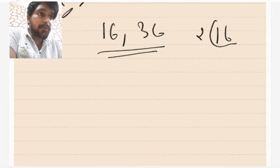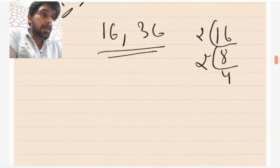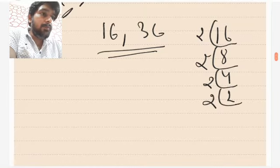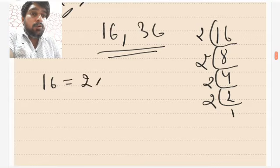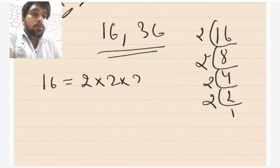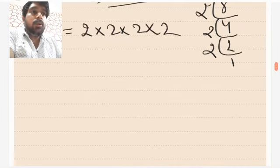So first let me find out the prime factorization of 16. Divided by 2 it comes to 8, then again by 2 it comes to 4, then again by 2 it becomes 2, and then by 2 it becomes 1. So the prime factorization of 16 is 2 × 2 × 2 × 2.